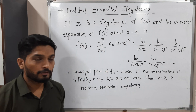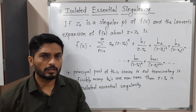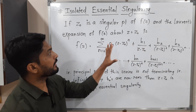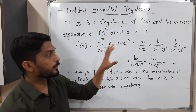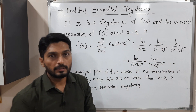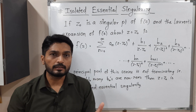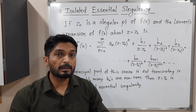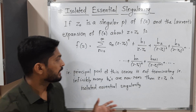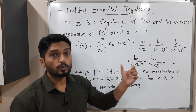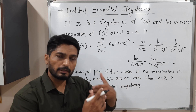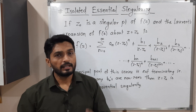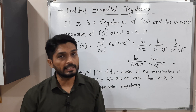So when do we say it is an isolated essential singularity? In most types of singularity we find the Laurent expansion. Here also we find the Laurent expansion of f(z) at z equals z-naught, having two parts: analytic part and principal part. In previous videos we saw that in some cases the principal part has only a finite number of terms, but here the principal part has infinitely many terms and is not terminating anywhere.